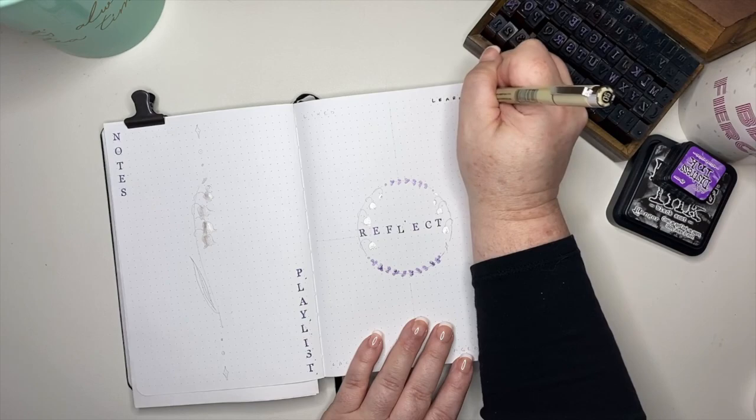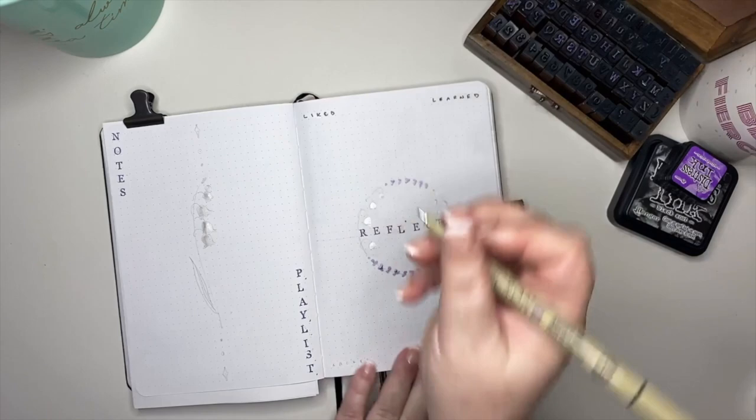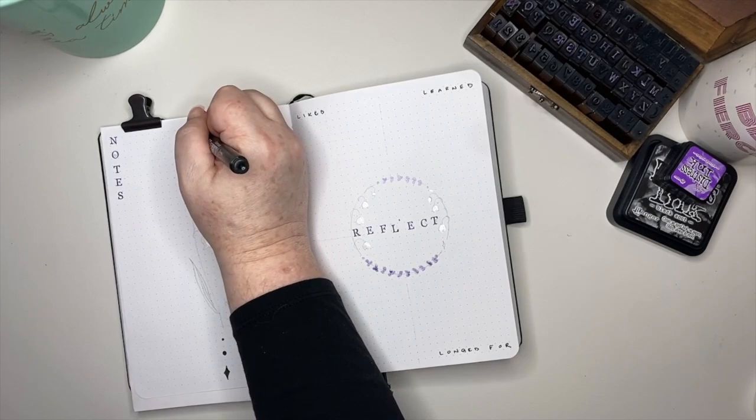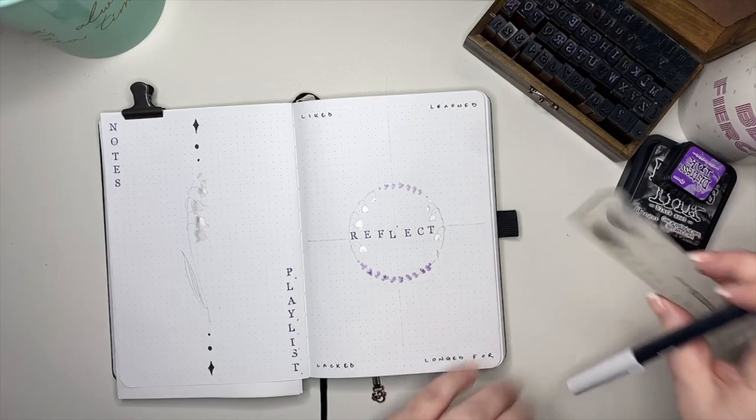I'm also changing his reflection area to match that that I've been using lately with the four L's: liked, learned, lacked, and longed for. For the end of the month page, we have used reflect or reflection as well as review, and this month Kenny did tell me he does prefer the word reflect or reflection. Review makes it sound a little more clinical to him, and he does want to be a little more introspective, so that's the word we're going to be using from now on.